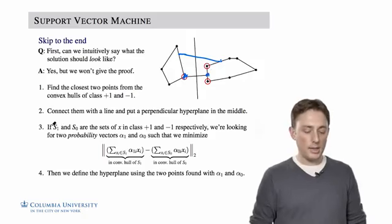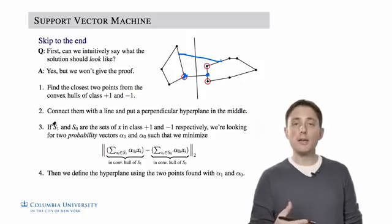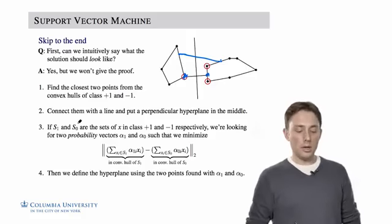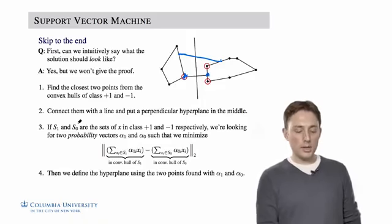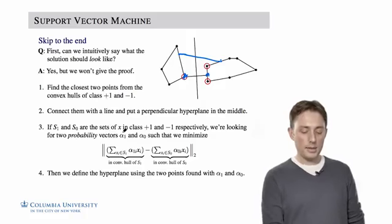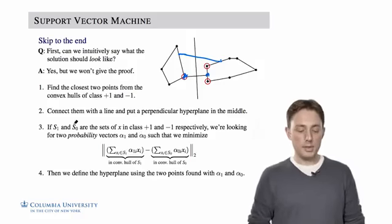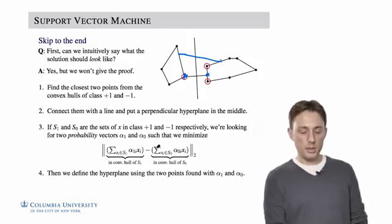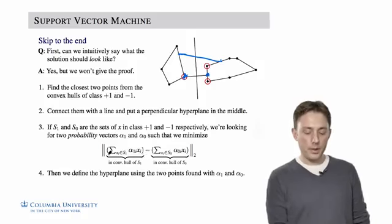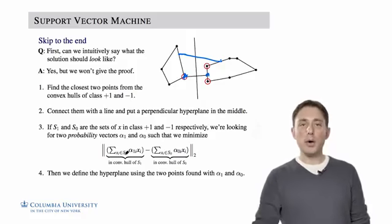Mathematically what we're saying is if we let the set S1 contain all of the data in class plus one, and the set S0 contain all of the data in class minus one, what we're looking for is two probability vectors. Alpha one, that is the length equal to the number of points in S1, and alpha zero, that's the length equal to the number of points in S0, such that we minimize the distance between these two vectors. Notice that this vector, by the definition of the convex hull, is a point in the convex hull of S1. We're taking all of the data in the plus one class, and then averaging it in some way to get a point in the convex hull of the first class.